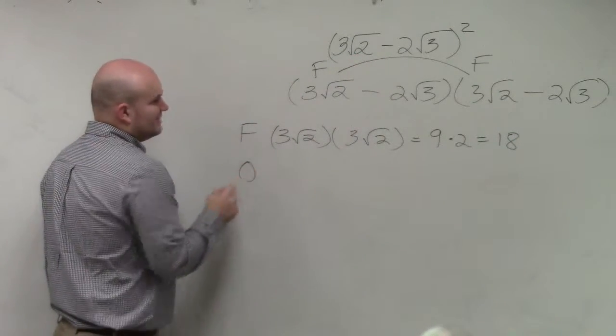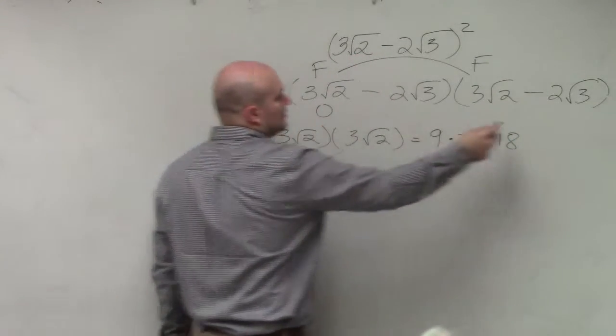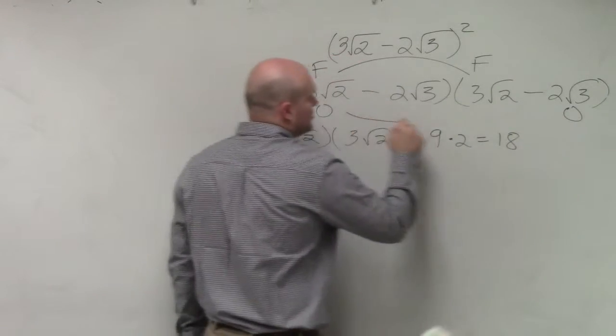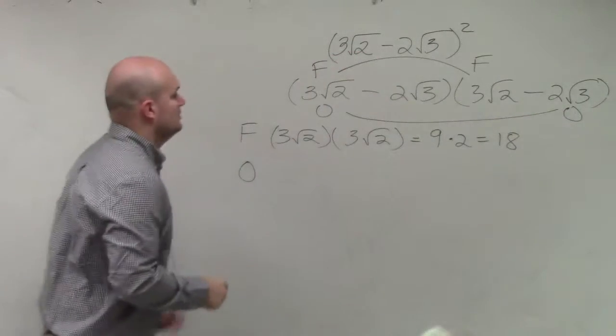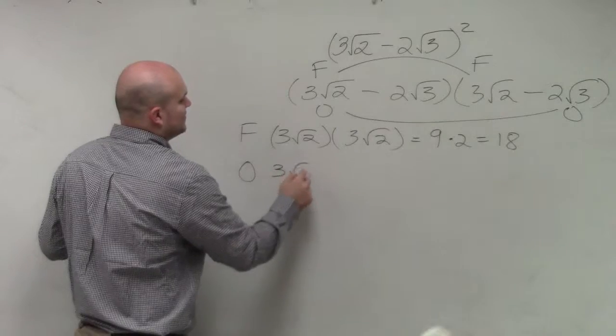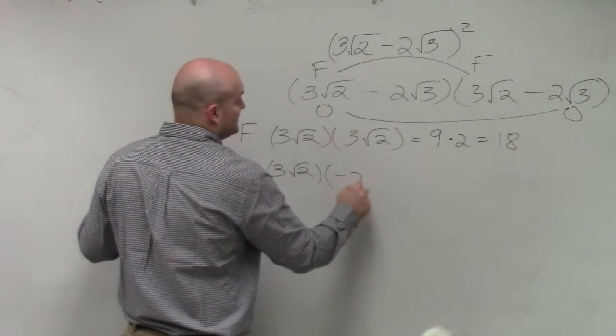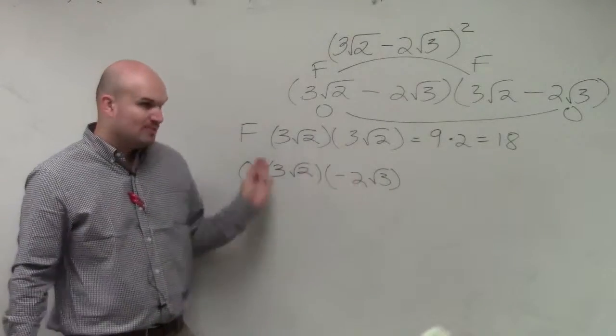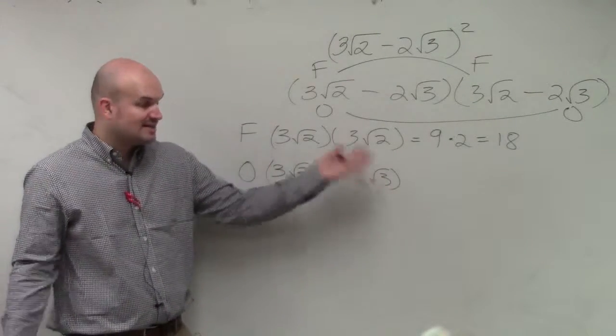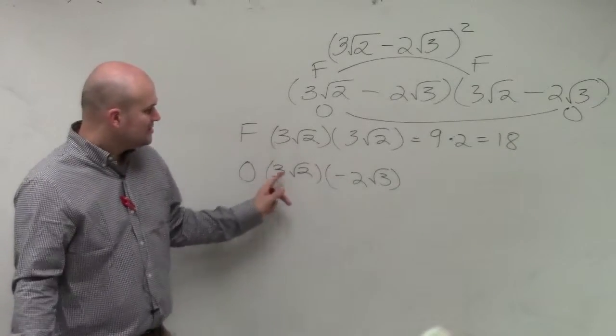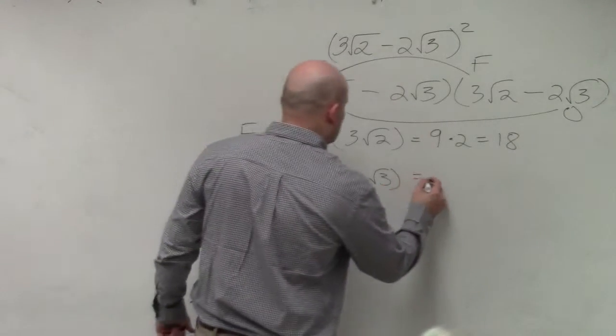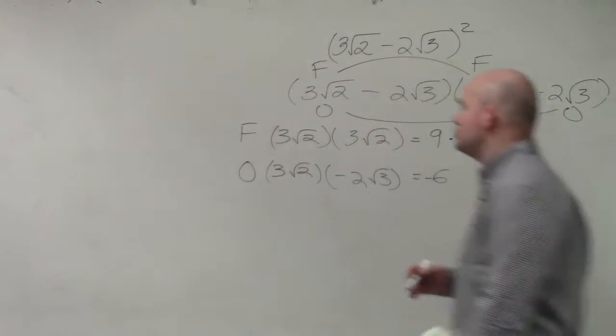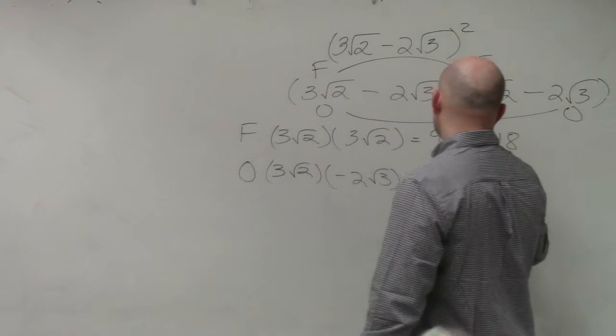Then the next one in FOIL is the outer. So now you pick these two outer terms and multiply them. So now I have 3 square root of 2 times negative 2 square root of 3. Again, multiplying, you just multiply your outer terms and then multiply your two radicands, as long as the index is the same. So 3 times negative 2 is going to be a negative 6, times the square root of 6.